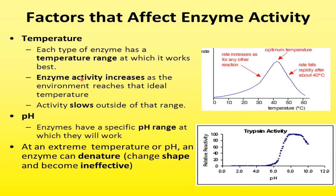At high temperatures, enzymes start to denature — they start to break down. If we see the diagram, the average optimum range for enzyme functioning is 30 to 40 degrees Celsius. At this temperature they work at a very good speed, but if temperature starts to increase, their activity will start to decrease. So temperature plays a big role in enzyme activity.